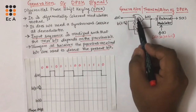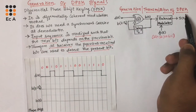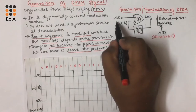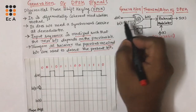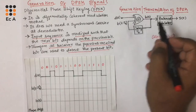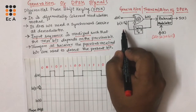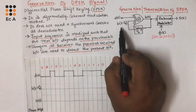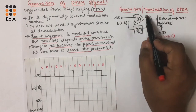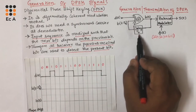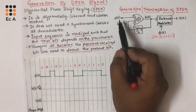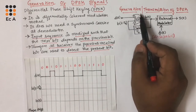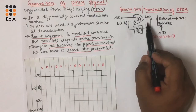Now let us understand how to generate or transmit the DPSK signal. This is the block diagram of the DPSK generator or transmitter. Here, D(t) is the input sequence, B(t) is the output sequence, and B(t - Tb) is the previous output which is delayed by Tb — that is, B(t - Tb) is the delayed version of B(t) delayed by 1 bit period. Depending upon the values of D(t) and B(t - Tb), the exclusive-OR gate generates the output sequence B(t).